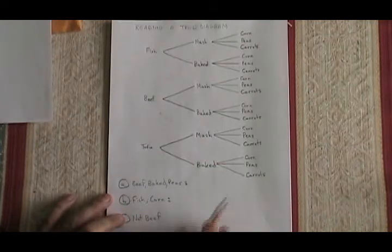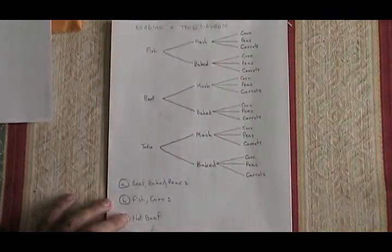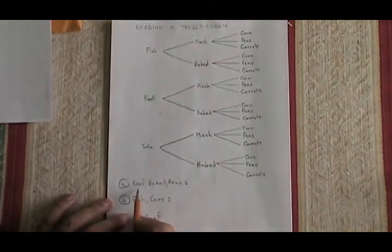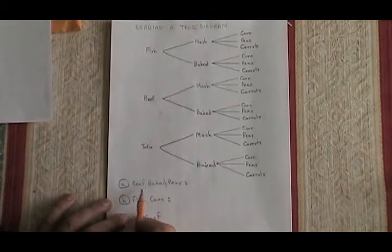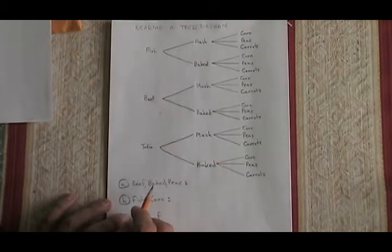The type of question you might get in which you are asked to read a tree diagram might be like question A down here. What combinations involve beef with baked potato and peas? How many combinations are there? And what fraction of the situation do they represent?